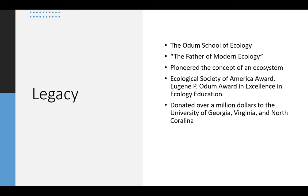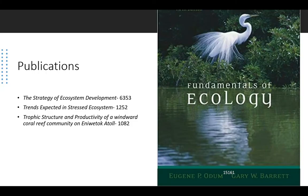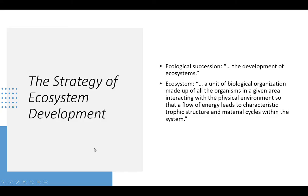He has awards named after him and when he died he donated most of his money to different universities. Here are his most famous publications with citations next to them. The most famous publication is actually a textbook, but since I couldn't cover a textbook in this amount of time, we're going to be talking about his paper 'The Strategy of Ecosystem Development.'